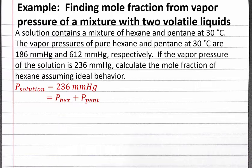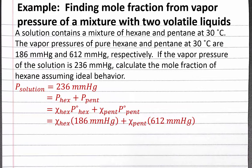The vapor pressure from hexane equals the mole fraction of hexane times the vapor pressure of pure hexane at this temperature. Likewise, the vapor pressure from pentane equals the mole fraction of pentane times the vapor pressure of pure pentane. We're given both vapor pressures of pure pentane and pure hexane, so we can substitute these values in.